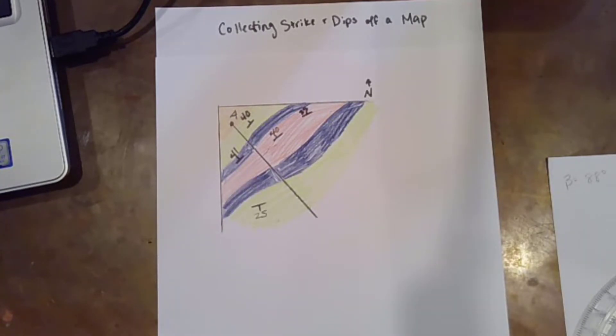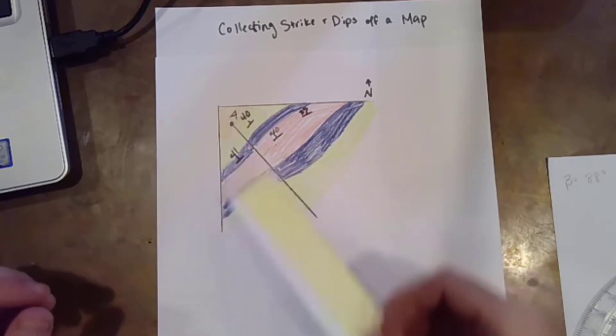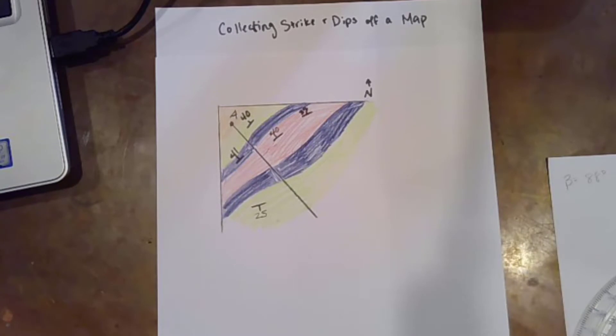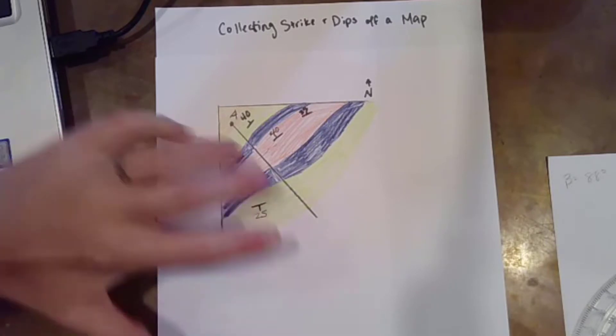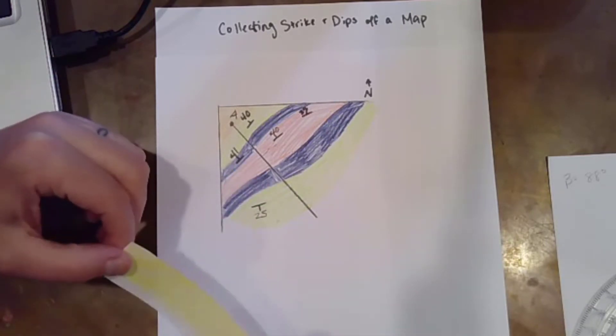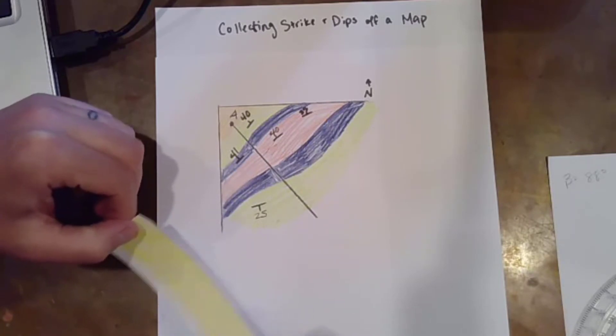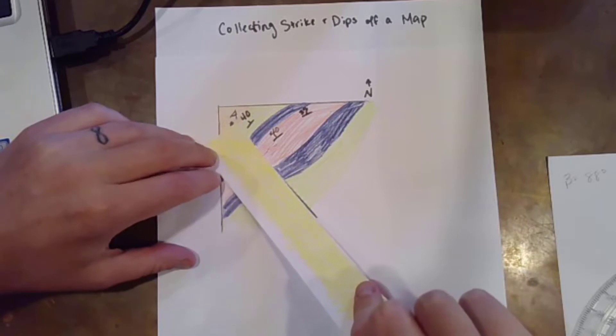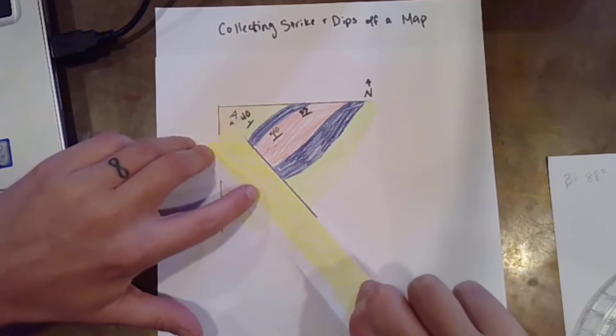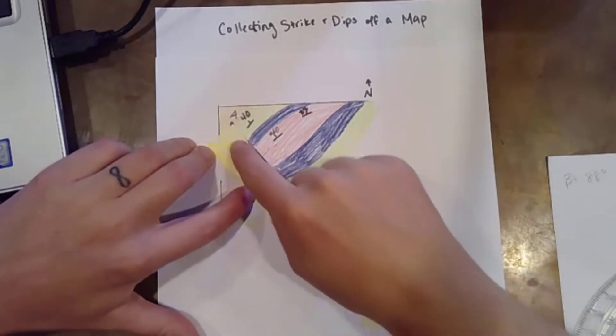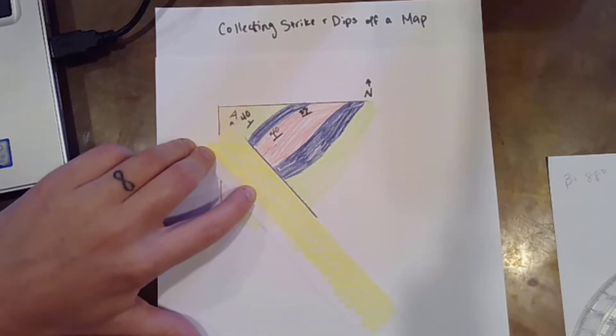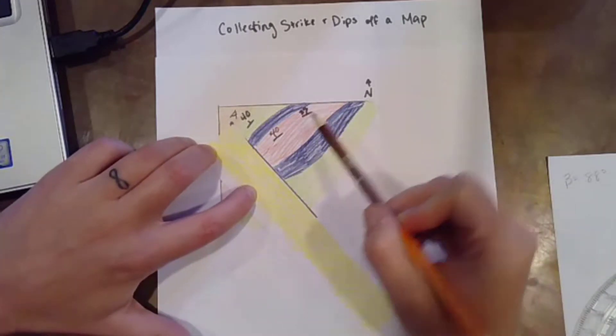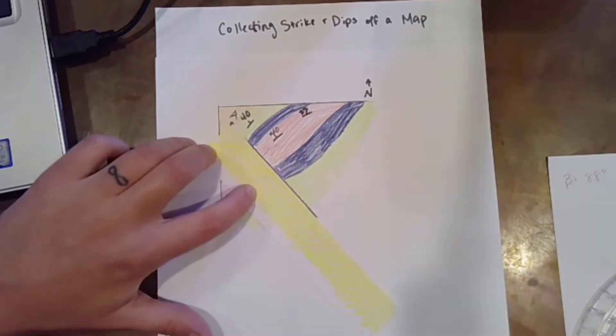So what you want to do is you're going to start by taking your strip of paper after you've selected the strike and dips that you think are relevant. So for me I'm going to select that 40 and this 25 because they convey changes in dip direction and amount and also because they hug that line. I'm going to take my strip of paper and I've kind of colored mine yellow so that I can see what's going on here, and I'm going to lay that strip of paper down along my profile line. So now what I'm going to do is I'm going to collect that orientation information.